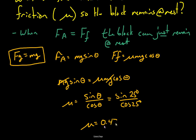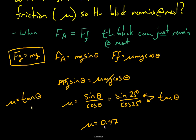Some of the more astute students pointed out that sine divided by cosine is the same as tangent. And that is right — it's the same as saying tan theta.